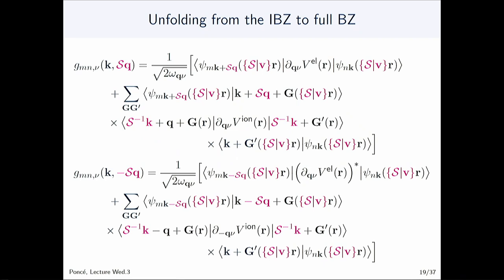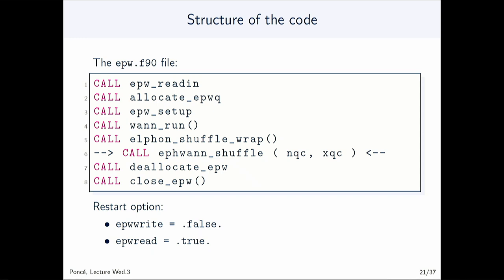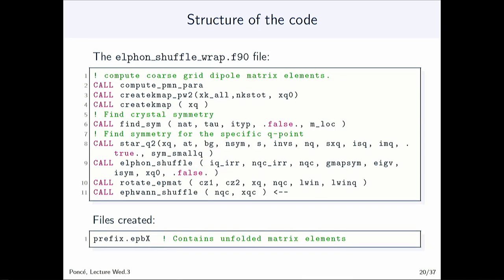Once we have everything in the fully unfolded coarse representation, we want to do a maximally localized Fourier transform. At the end of the elphon_shuffle_wrap routine there is a call to 'eph1_to_shuffle', which is really the main routine of EPW. This routine goes from the coarse grid to real space, and then you can do the back-interpolation. Once you've gone from the coarse grid to real space, those big EPB files can be removed as they are no longer needed.